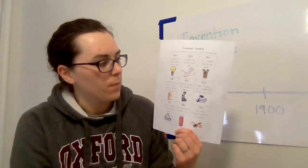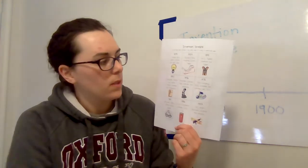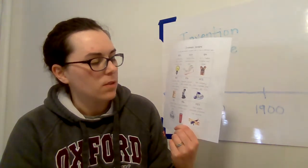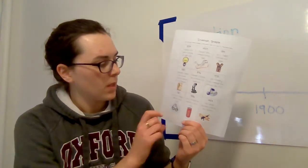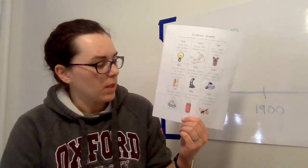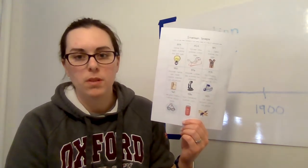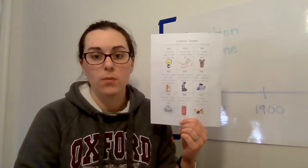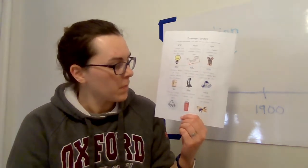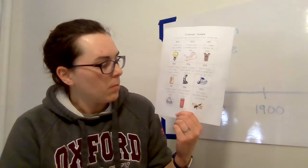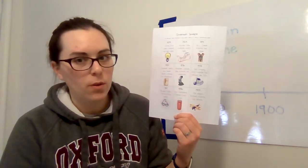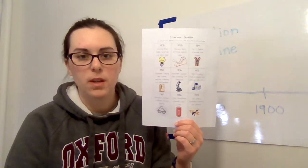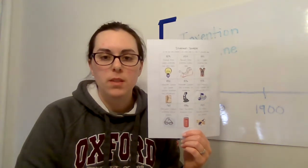1972 the company RCA invented the compact disc or CD. 1760 Benjamin Franklin invented bifocal glasses. Those are glasses that have two different lenses, one for seeing things far away and one for seeing things close up. 1886 John Pemberton invented coca-cola.